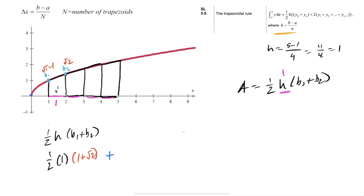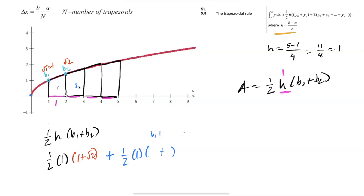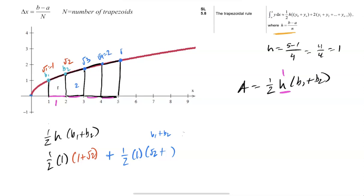Then do the same for trapezoid 2: (1/2)(1)(base 1 + base 2). Base 1 is √2 — already have that. Base 2 is the height at x = 3, which is √3. And note: right here the base will be √4 = 2, and the last base will be √5.